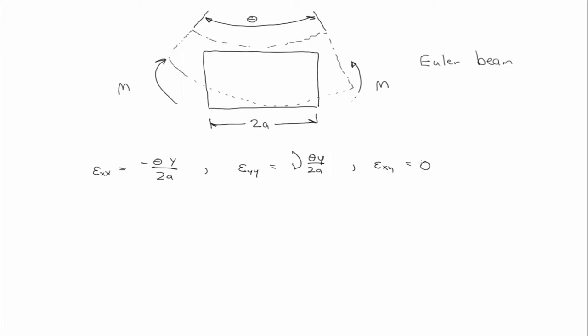So the assumption of the Euler beam is that it's long and slender, right? And that planes remain planes in the beam. Planes originally parallel remain parallel, right?